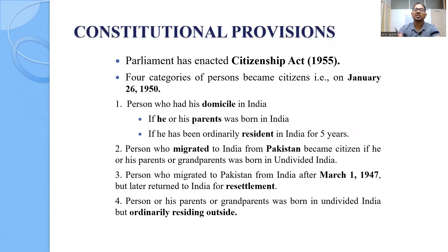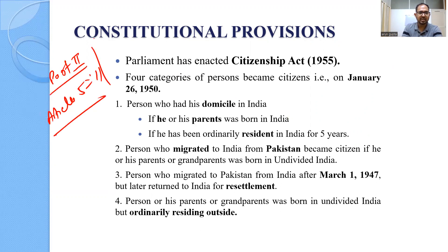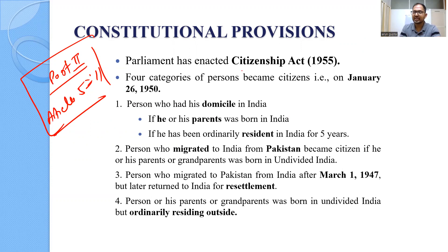Under Part 2, Articles 5 to 11 cover citizenship in India. The power to make laws regarding citizenship has been given to Parliament. With that power, Parliament enacted the Citizenship Act of 1955, which has been amended multiple times, most recently in 2019. We will be talking about the amendments in separate current affairs videos.